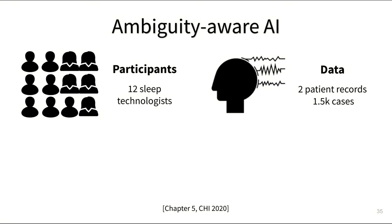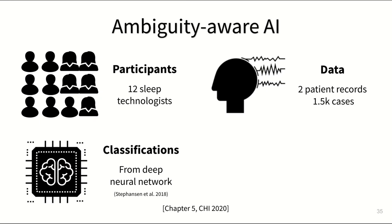Taken together, these data records summed to about 1,500 chunks of biosignal data to be classified. Both AIs — conventional and ambiguity-aware — used a state-of-the-art deep neural network published in prior work to produce classifications along with quantitative uncertainty information.